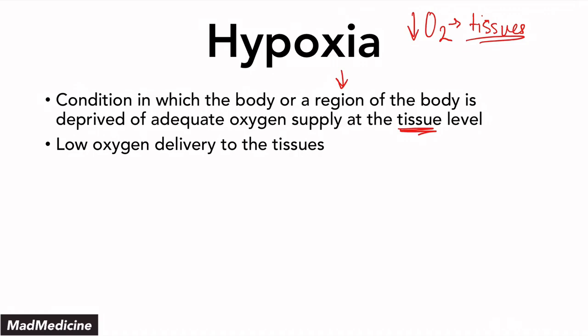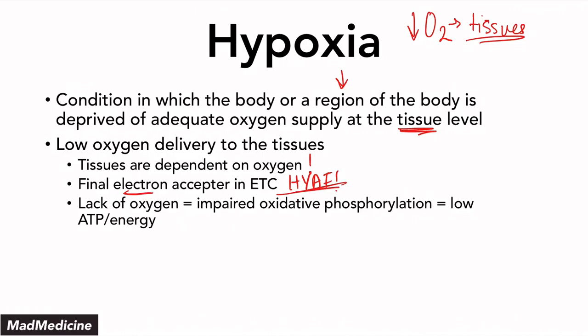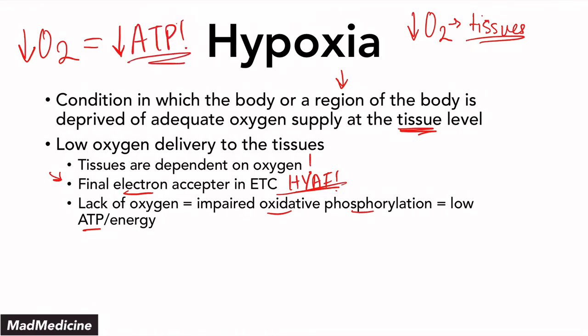When you have low oxygen delivery to your tissues, you need to think deeper. Every tissue is dependent on oxygen — even the more resilient ones — because oxygen is the final electron acceptor in the electron transport chain. That is very high yield. A lack of oxygen is going to lead to impaired oxidative phosphorylation because you do not have the final electron acceptor. And thus you're going to have low ATP. Low oxygen leads to low ATP. In hypoxia, your cells have low ATP and they're getting damaged — they're not able to adapt because they cannot create the ATP they need to adapt.